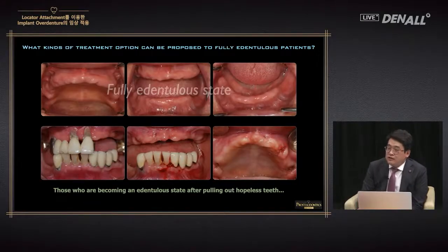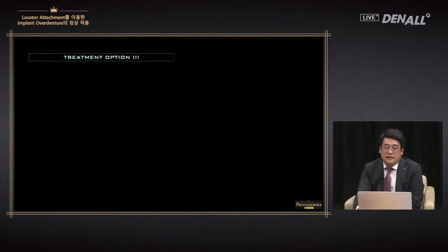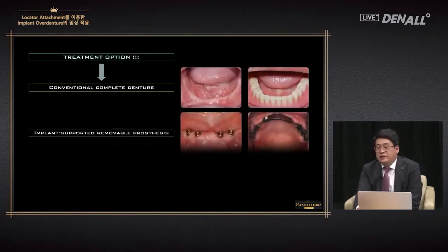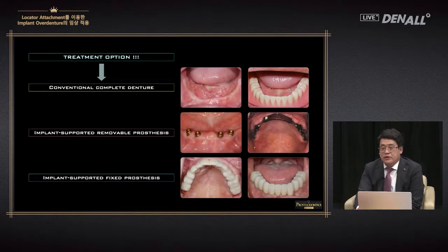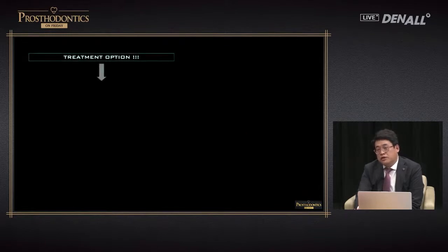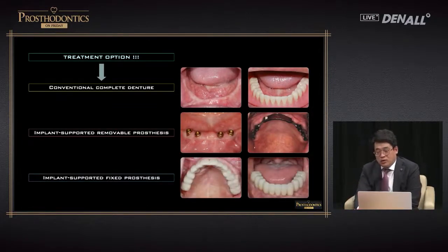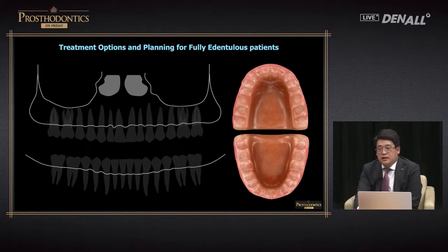At times we come across fully edentulous patients; in other cases we have to remove all teeth and patients become fully edentulous. We need to come up with a treatment plan. There are different options, but we can think largely of three: complete denture, placing a couple of implants for removable prosthesis like overdenture, or placing multiple implants for a fixed prosthesis. When I first started clinical treatment, what was most difficult was coming up with a treatment plan.